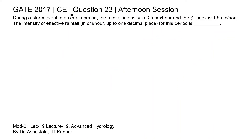This is question 23 of the civil engineering paper of K-2017 afternoon session. During a storm event in a certain period, the rainfall intensity is 3.5 centimeter per hour and the phi index is 1.5 centimeter per hour. The question asks for the intensity of effective rainfall for this period.